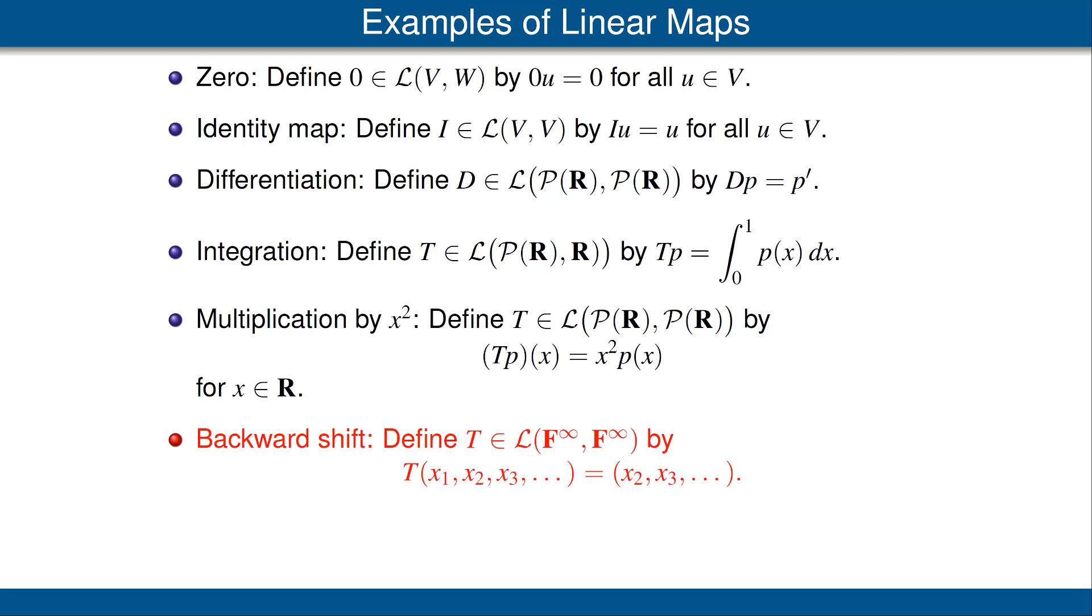Our next example is called the backward shift. It is defined from the vector space F^∞ to itself. Recall that F^∞ is the vector space of all sequences of elements of F. The backward shift is defined as follows: We start with the sequence x_1, x_2, x_3. We chop off the first term x_1, throw it away, and shift all the other terms one to the left. That's why it's called the backward shift.